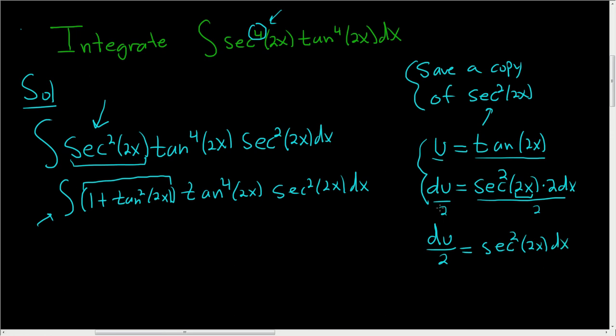So we end up with du over 2 equals secant squared 2x dx. At this point we're ready to make a substitution. u is going to be tangent, that's taken care of, and this piece here is going to be du over 2.